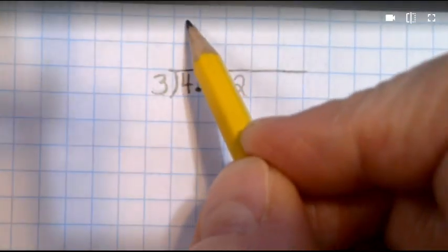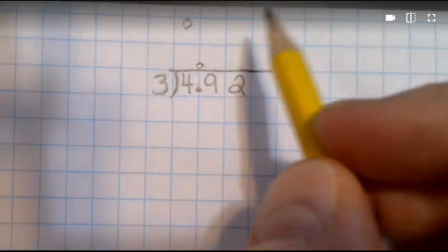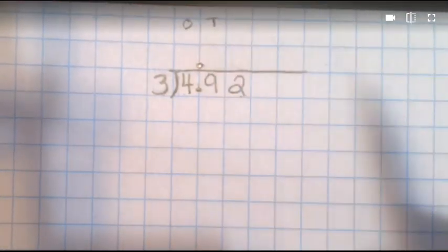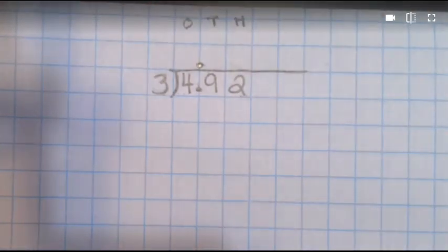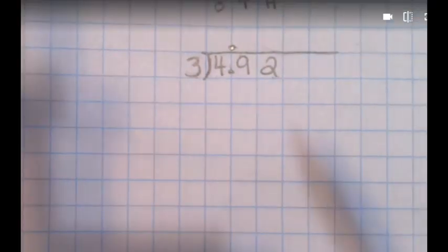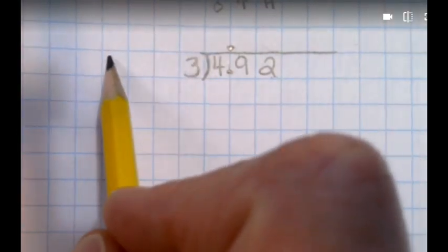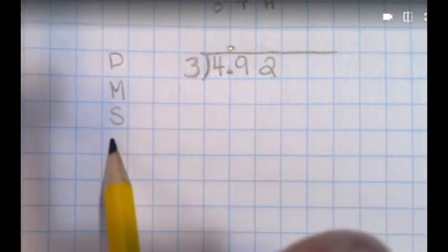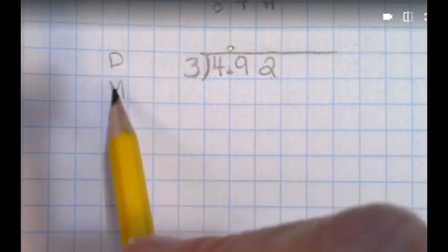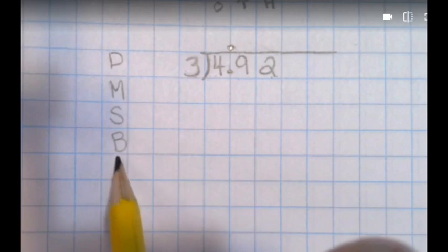Now I'm going to make a note here. So we see this is our ones column. I'll put a little O there and I'm going to put a T here to show that this is our tenths column and a little H right here to show that this is our hundredths column. Okay. Now we have our mnemonic that we were going to use to remember, does McDonald's sell burgers? DMSB. Divide, multiply, subtract, bring down.